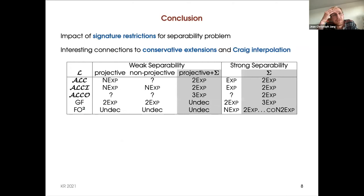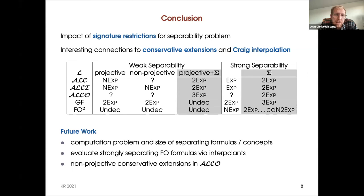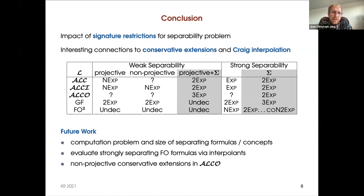To conclude: we have studied the impact of signature restrictions on the separability problem and established interesting connections to conservative extensions and Craig interpolants. This is an overview of our results — the gray columns are our results and the white columns are the known results for separability. For future work, we want to look at the computation problems — how to actually compute these separating formulas and how big they can be. We also want to evaluate the computation of strongly separating formulas via first-order tools. An open question remains: how difficult are non-projective conservative extensions in ALCO? That's it. Thanks, and I'm open for questions.